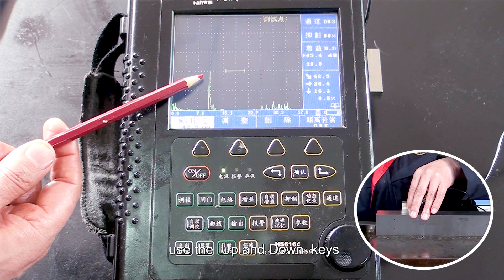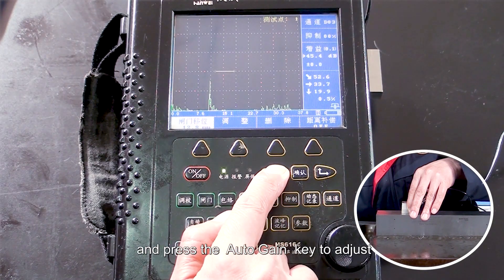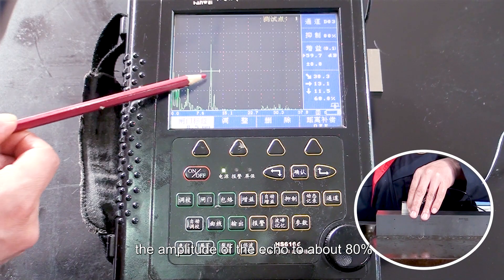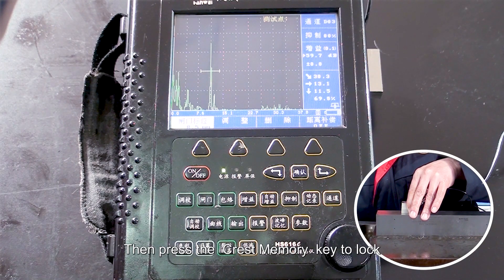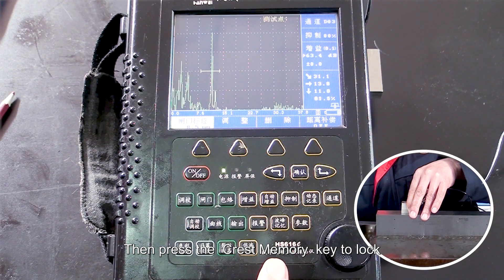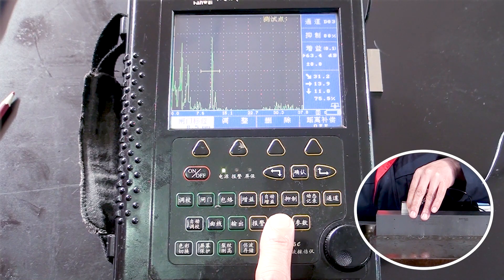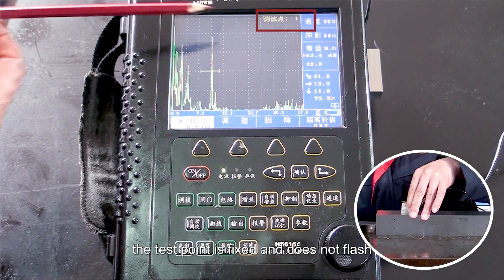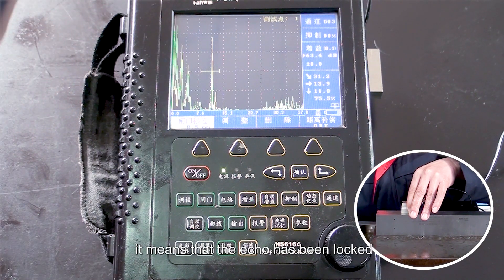Use the up and down keys to move the gate to cover the echo, and press the auto-gain key to adjust the multiplier of the echo to about 80%. Then press the peak memory key to lock the maximum echo in the gate. When the number behind the test point is fixed and does not flash, it means that the echo has been locked.